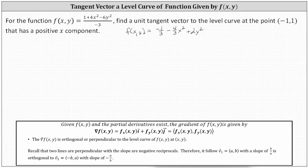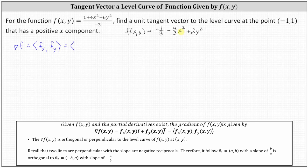Now let's determine the gradient of f, which is the vector function in which the x component is equal to the partial of f with respect to x, and the y component is equal to the partial of f with respect to y. The partial of f with respect to x is negative eight thirds x, and the y component, the partial of f with respect to y, is four y.